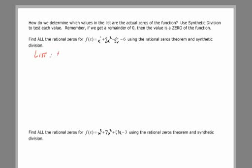It's going to be all possible values, positive and negative, of this constant at the end. All the factors of 6 are 1, 2, 3, and 6. And all the factors of the coefficient up front, 1, are just 1.